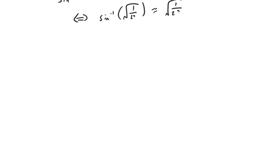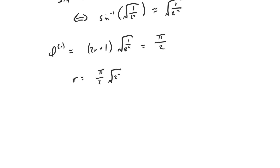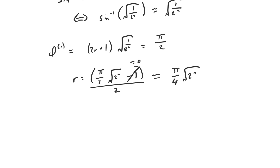So φ_r is approximately equal to (2r + 1) times √(1/2^n). Setting this equal to π/2 and solving for r: r equals (π/2 × √(2^n) − 1) / 2. Since we're considering large values of n, the −1 piece is quite small compared to √(2^n) — for example, if n = 20, √(2^n) = 1024, so the minus one isn't carrying much weight. So we find that when r is equal to π/4 times √(2^n), φ_r is approximately equal to π/2, giving us a high probability of measuring x-star.